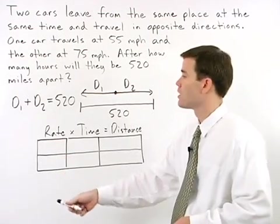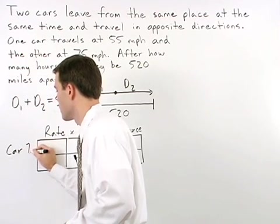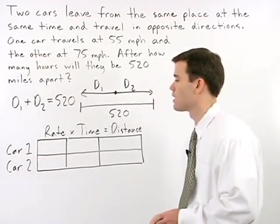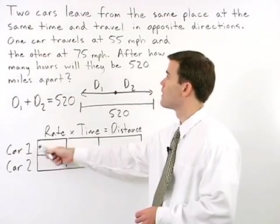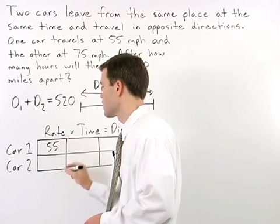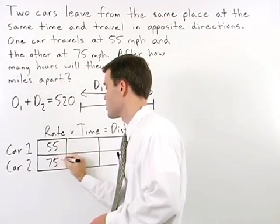Down the left side we have our two cars: car one and car two. The rate for the first car is 55 miles per hour. The rate for the second car is 75 miles per hour.